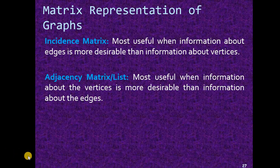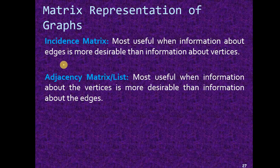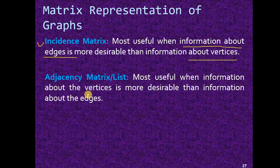Welcome. Matrix representation of a graph. We know that a graph can be represented as an incidence matrix or as an adjacency matrix. We use the incidence matrix when information about edges is more desirable than information about vertices. When information about vertices is more desirable than information about edges, we use the adjacency matrix.